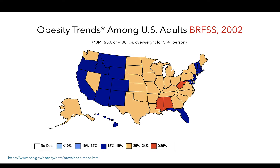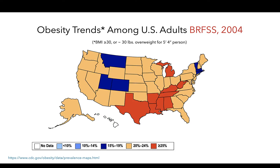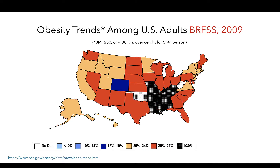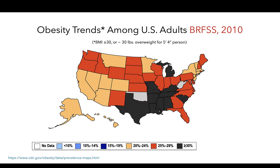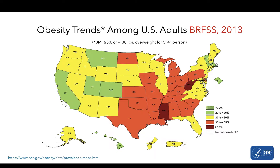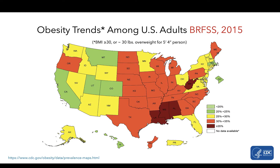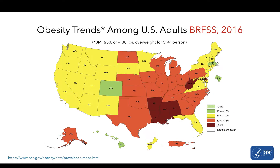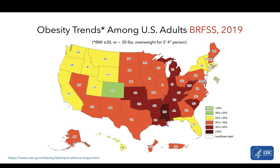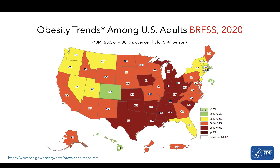These trends continue into the 2000s as we see more and more dark states, again mainly concentrated in the southern, eastern, and midwestern regions. As we move into the 2010s, we see some improvements in some states that change from yellow to green, but worsening in others, especially in the southern and midwestern regions.